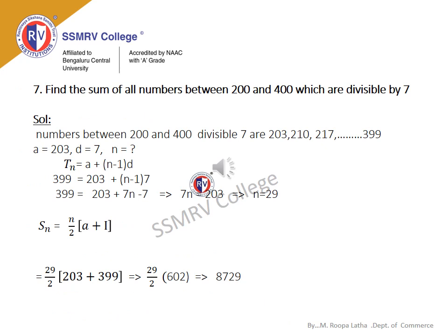Problem: Find the sum of all numbers between 200 and 400 which are divisible by 7. The numbers between 200 and 400 divisible by 7 are 203, 210, 217, ... up to 399. So a = 203, d = 7, and the last term l = 399. Using tₙ = a + (n−1)d: 399 = 203 + (n−1) × 7, giving 7n = 203, so n = 29. Then Sₙ = n/2 × (a + l) = 29/2 × (203 + 399) = 29/2 × 602 = 29 × 301 = 8729.